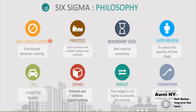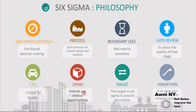With this, all the philosophies are covered. Before we end this lecture, let's summarize the points. Six Sigma stands on these following philosophies: data-driven, process, boundaryless, gate review, CTQ — critical to quality, DPMO — defects per million opportunities, target, and variation.